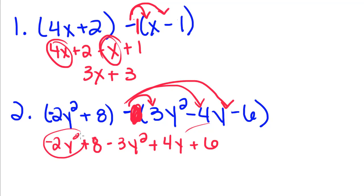Now we're going to combine our terms. Negative 2y squared minus 3y squared is going to give us a negative 5y squared, and then we have a plus 4y because there's nothing else with a y in it, and then we have 8 plus 6, so plus 14.